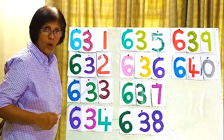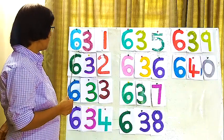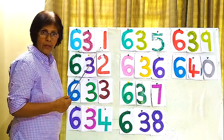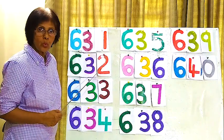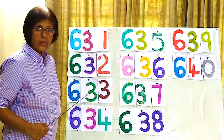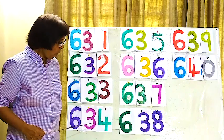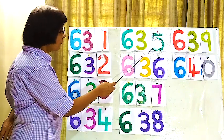First we will read the numbers individually and then we will read in order. Here the first number is 631, 632, 633, 634.